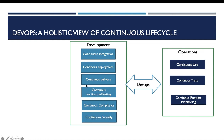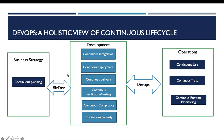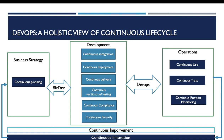There are other approaches which propose a holistic view of the continuous software engineering lifecycle or DevOps continuous lifecycle. These approaches add to the development and operations phases a business strategy phase which includes continuous planning, and the relationship between business strategy and development is called BizDev. This holistic view must ensure two things: continuous improvement and continuous innovation.